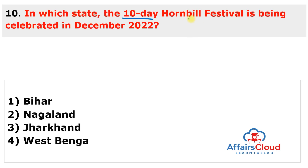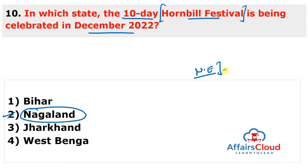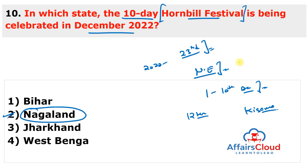Question 10: In which state is the 10-day Hornbill Festival celebrated in December 2022? The answer is Nagaland. The Hornbill Festival, the biggest festival in Northeast India, is annually observed from 1st to 10th December at the Naga Heritage Village in Kisama, located 12 km from Kohima, Nagaland. 2022 marks the 23rd edition of the Hornbill Festival. Vice President Jagdeep Dhankhar graced the inaugural function as chief guest. It is the main celebration of the Naga warrior tribes.